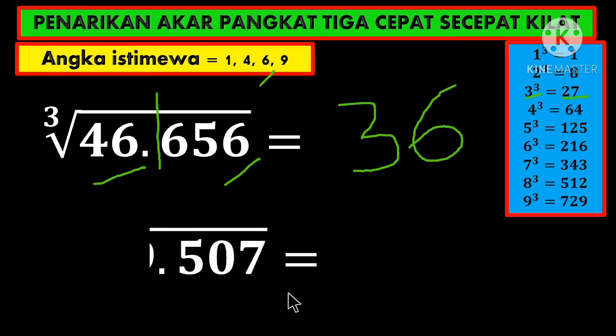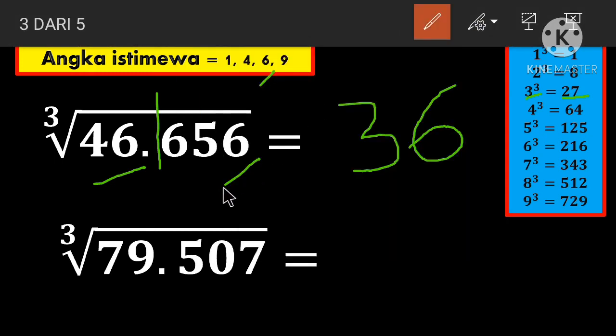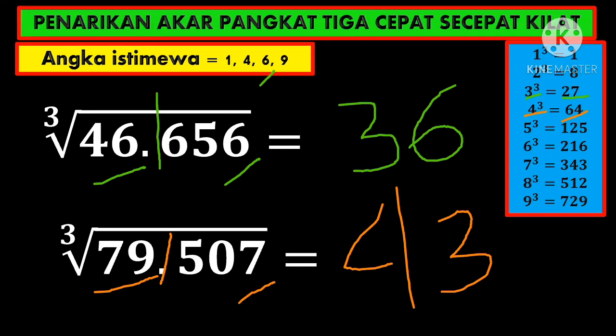Then the next example is cube root of 79,507. Same, we separate it. Look at the last digit, it's 7. Is it in the special numbers? No. To make 10, 7 plus what? Plus 3. For 79, which one is closest? That's 64, so the first digit is 4. The result is 43. How about that? Very easy, right?